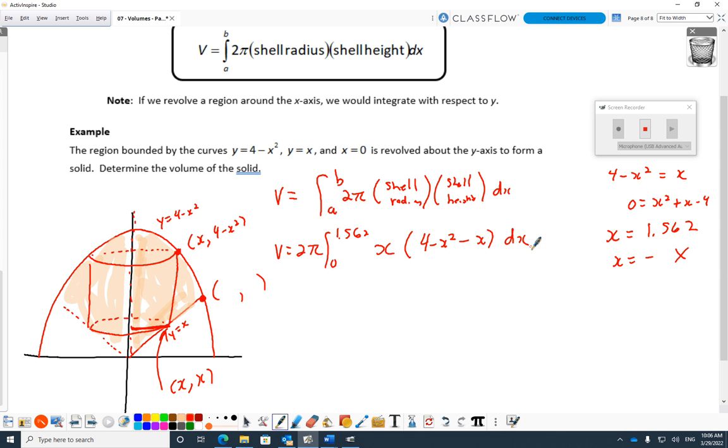Top Y value, subtract bottom Y value. Yeah, I found this X value, 1.562. So I got to go 0 out to this 1.562 that I found with the quadratic formula. I'll land this thing and then pause for questions. Okay, 2 pi, 1.562, 4X minus X cubed minus X squared. I'm rushing, so I'm double checking on my notes so I don't make a mistake here.